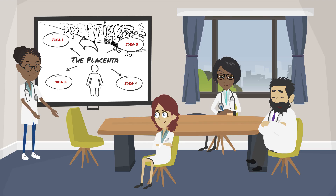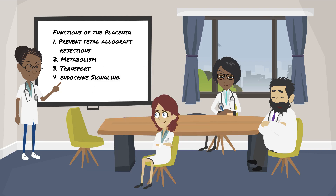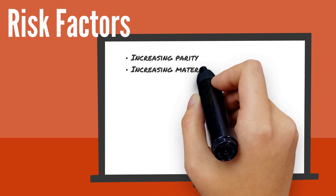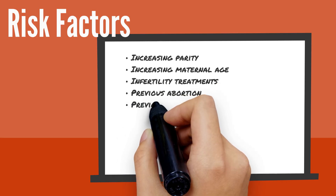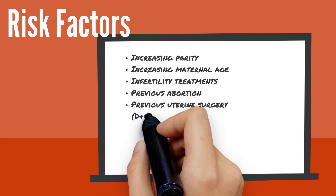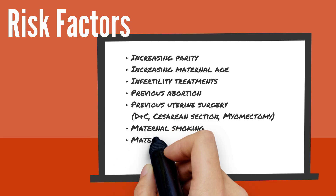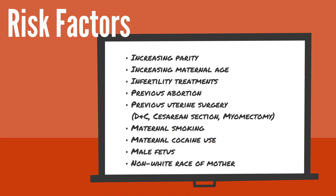Now that we've gone through placental development, let's look at some clinical implications. The placenta has four main functions: prevent fetal allograft rejection, metabolism, transport, and endocrine production. There are several risk factors for abnormal placental development: increasing parity, increasing maternal age, infertility treatments, previous abortion, previous uterine surgeries such as dilation and curettage, cesarean section or myomectomy, maternal smoking, maternal cocaine use, male fetus, or non-white race of the mother.